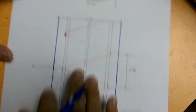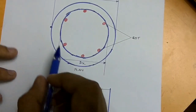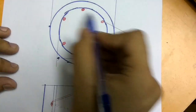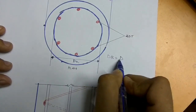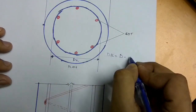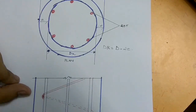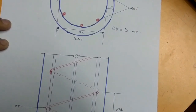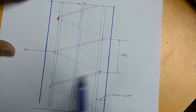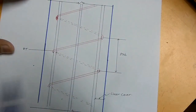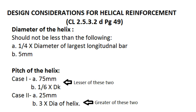Looking at the diagram of a circular column — in plan and section — DK is the diameter of the core measured up to the outside of the helix. To get DK, you deduct the clear cover on both sides from the total diameter: DK = D − 2e. In the section, you can see the helical reinforcement going around the column. The pitch S is the distance between two consecutive helical ties, and E is the clear cover. The inner bars are the main longitudinal bars.